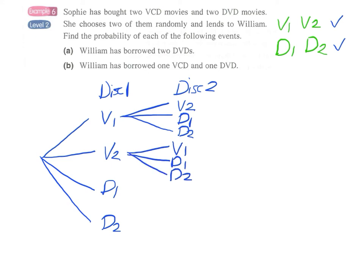And if we have D1 here then we can have V1, V2 and D2 in disc two. And finally if we have D2 in disc one then we have V1, V2 and D1 in disc number two. And so finally we have a total of how many possible outcomes here.